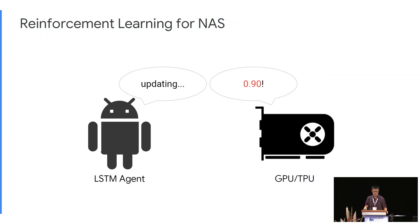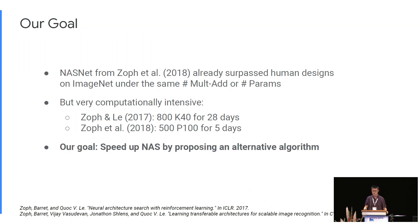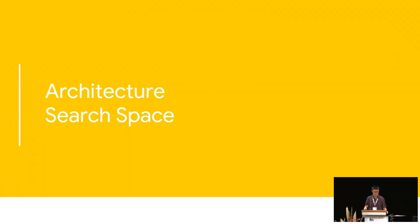Before our work, Neural Architecture Search had already gained much success. However, these approaches unanimously suffered from being computationally intensive. For example, NASNet was found after sampling 20,000 models, which used 500 P100s for five days. The goal of our paper is to lower the barrier to AutoML and speed up the NAS process by proposing a novel algorithm. But before we describe the algorithm, it is very important that we understand the architecture search space, which is the focus of the next section.